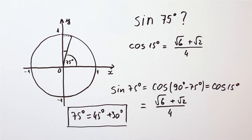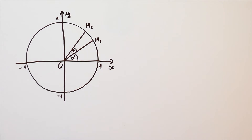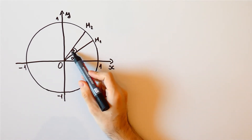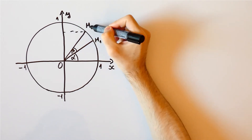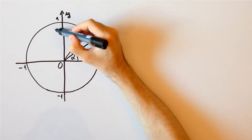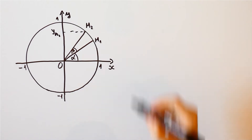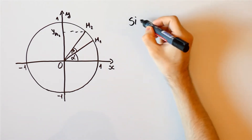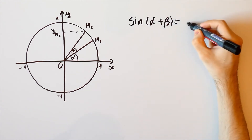Well, for that purpose, we'll derive the formula for the sine of alpha plus beta. These are angles alpha and beta, and if we denote the y-coordinate of M2 as yM2, then the sine of alpha plus beta is equal to yM2.